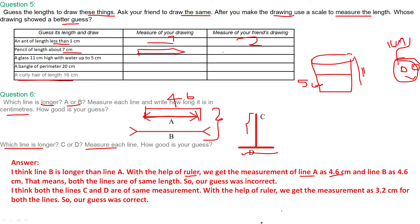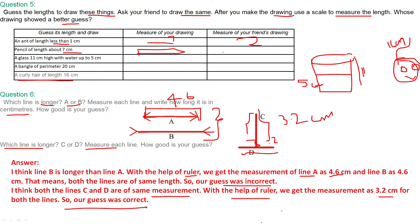Which line is longer, C or D? I think both C and D are the same measurement. With the help of a ruler, we get the measurement 3.2 centimetre for both lines. Line C is also 3.2 centimetre. So our guess is correct — whatever we guessed is correct.